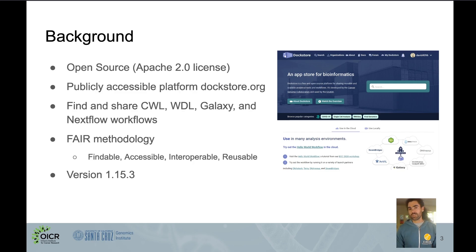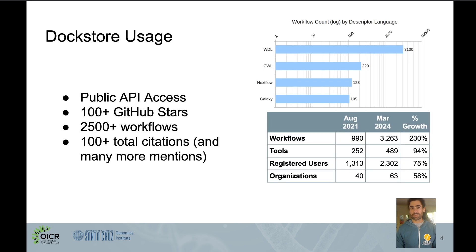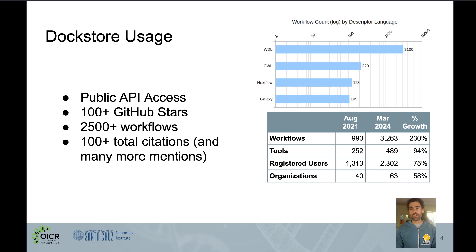Our current version is 1.15.3. DocStore is fairly widely used — it has public API access and over 100 stars on GitHub. We're currently hosting more than 2,500 workflows, with a breakdown by language visible in the upper right. We've been cited over 100 times in the literature and mentioned many more times.